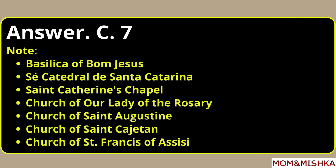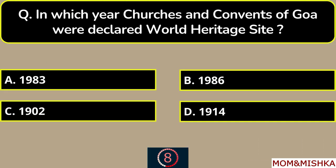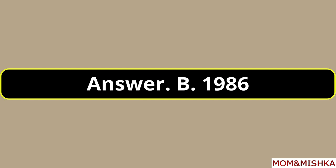How many UNESCO World Heritage Sites are there in Goa? Total seven sites from Goa, option C. In which year were the churches and convents of Goa declared a World Heritage Site? In 1986, option B.